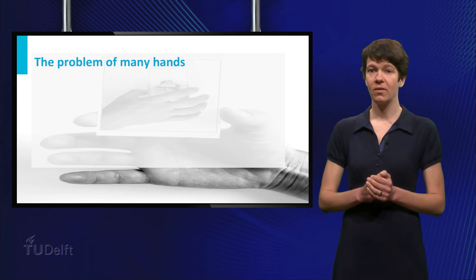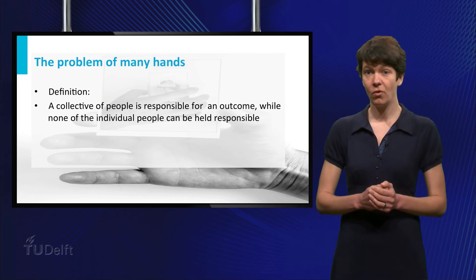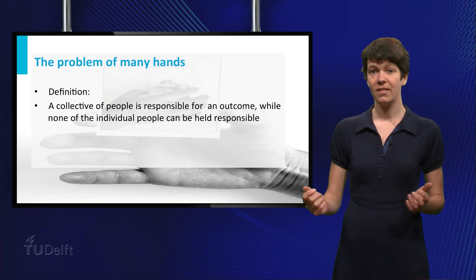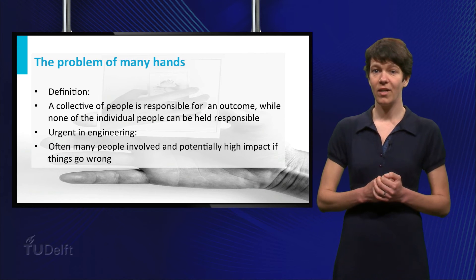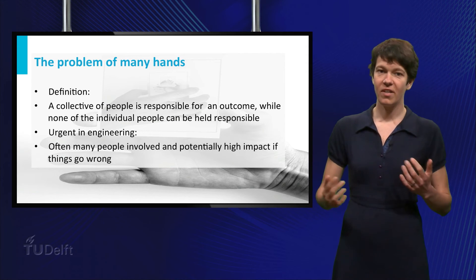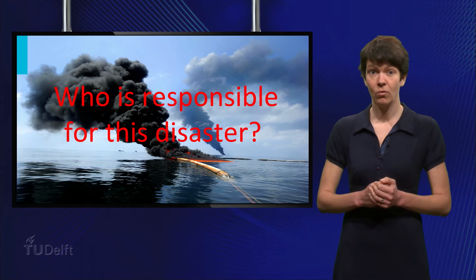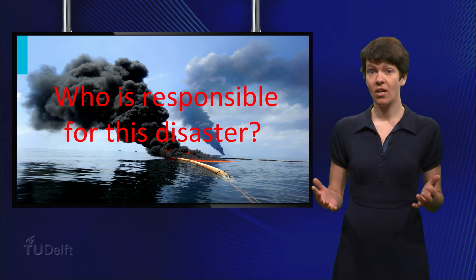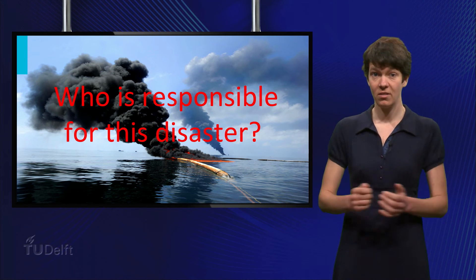And this phenomenon is called the problem of many hands. Because there are many different people involved, it is impossible to identify one single person that is responsible. This problem is very urgent in engineering because there are often many people involved in the development of technology with potentially high impact if things go wrong. Think of the oil spill of the BP platform in the Mexican Gulf — the impact of this disaster was huge and it immediately prompted the question: who is responsible for this disaster?